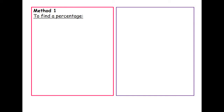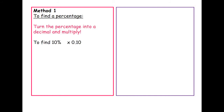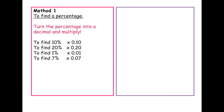So there are two methods to calculate percentages and increases and decreases. Just to recap — Method 1: turn the percentage into a decimal and multiply. To find 10%, multiply by 0.1. To find 20%, multiply by 0.2. For 1%, multiply by 0.01 — people often make a mistake here. For 7%, use 0.07; 29%, use 0.29; 81%, use 0.81. Simply divide by 100 to convert any percentage to its decimal multiplier.